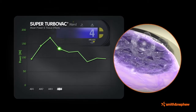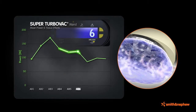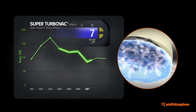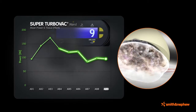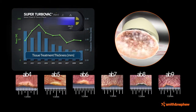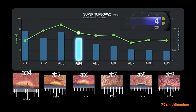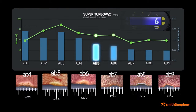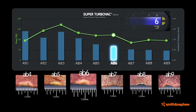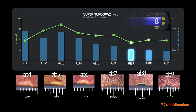When the controller setting increases, the plasma field increases in size and power decreases accordingly. When Smith and Nephew coablation wands operate in ablation mode, the localized plasma precisely removes tissue with minimal damage to surrounding tissue.